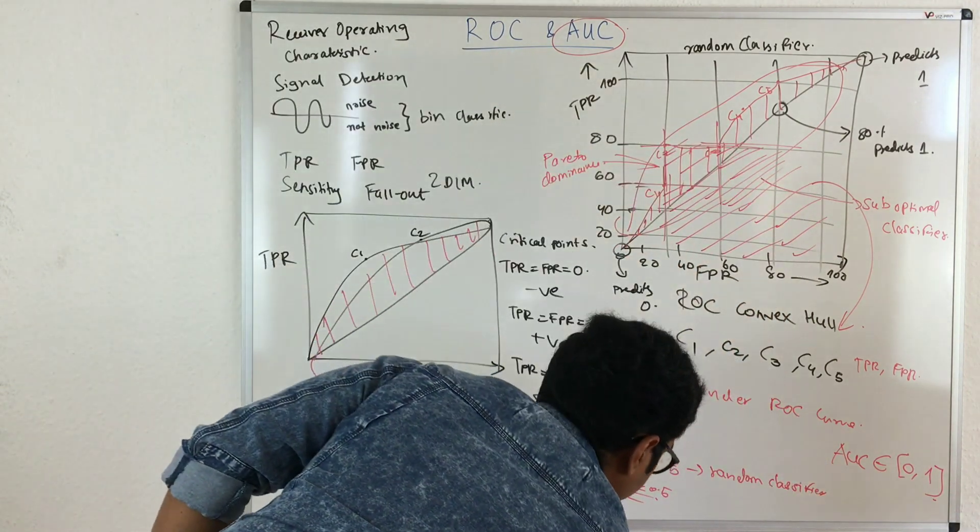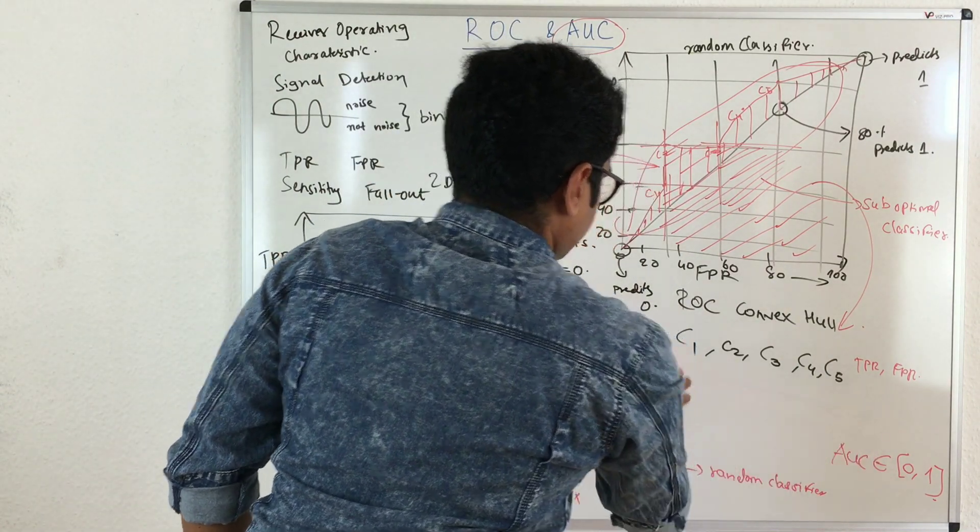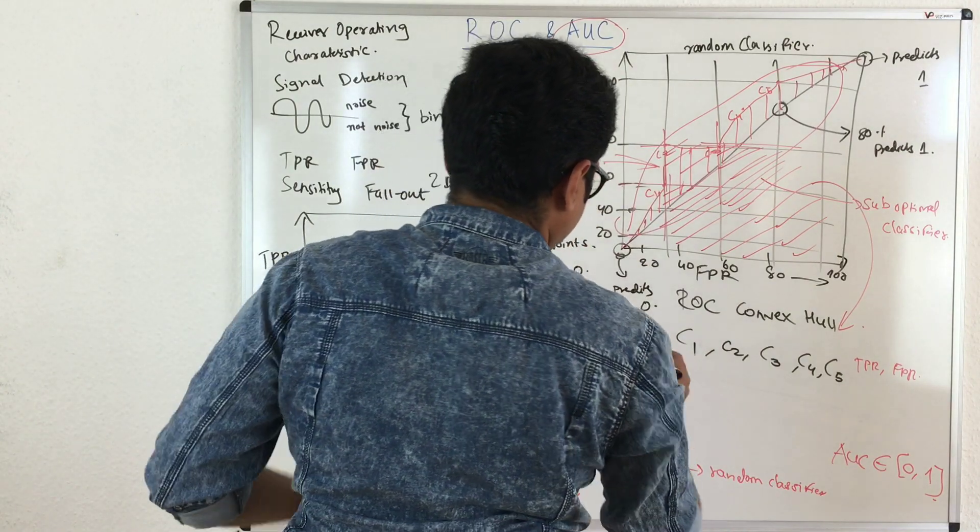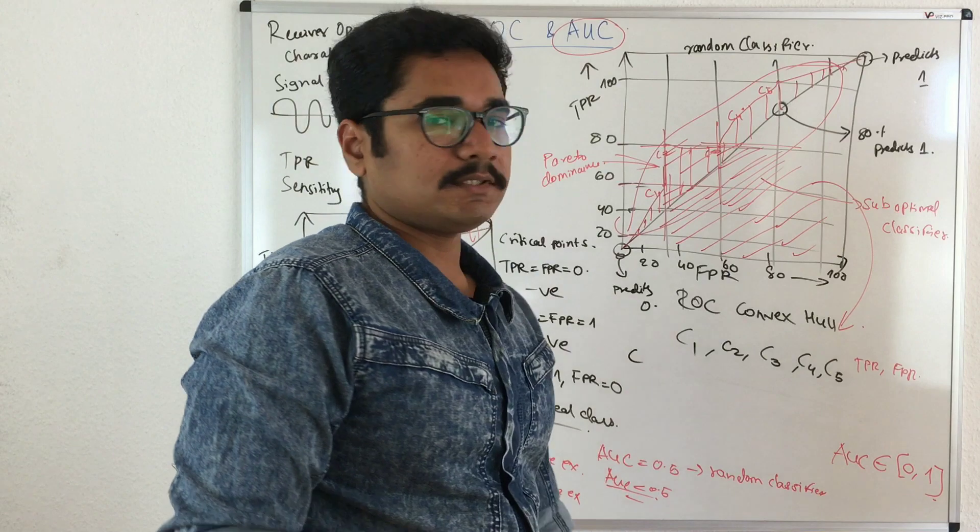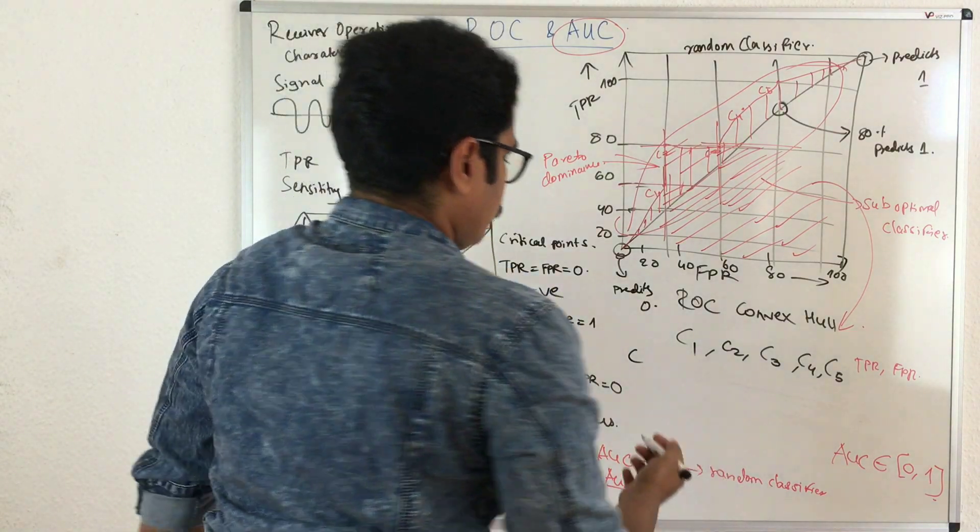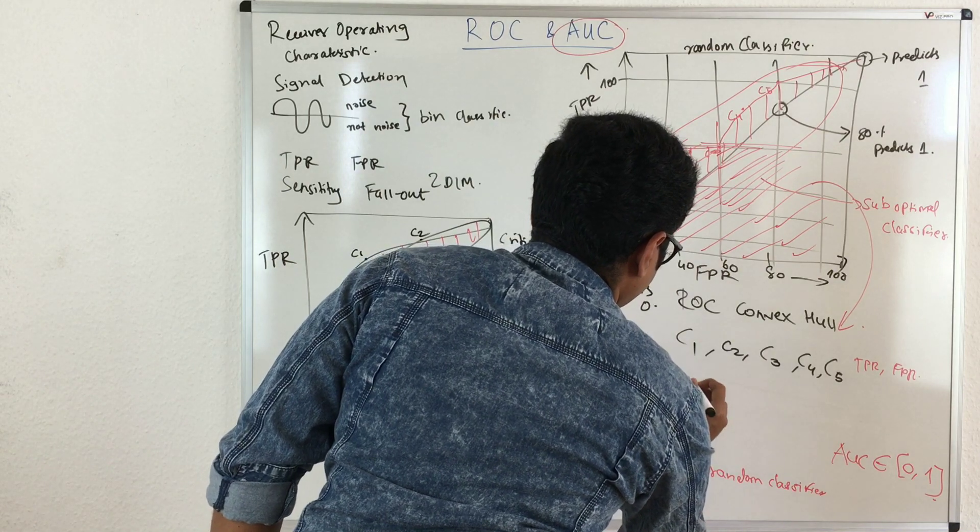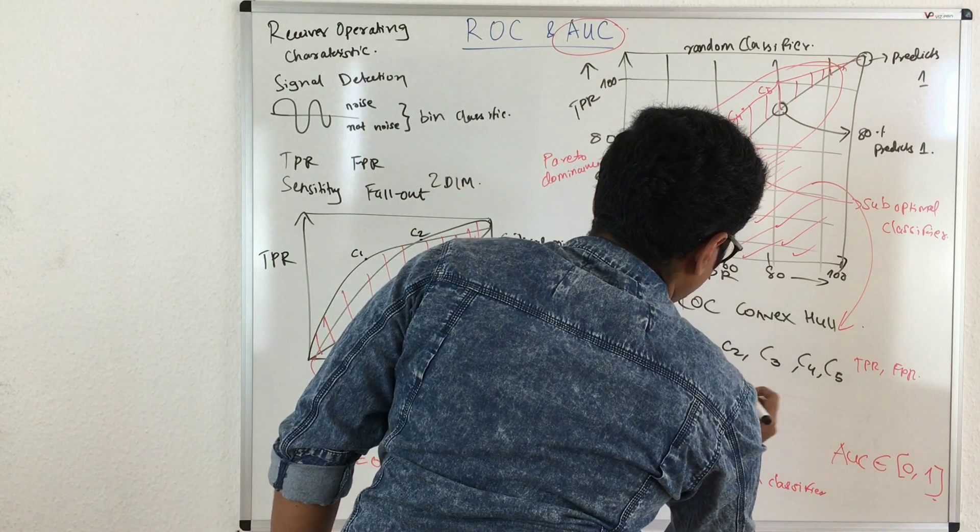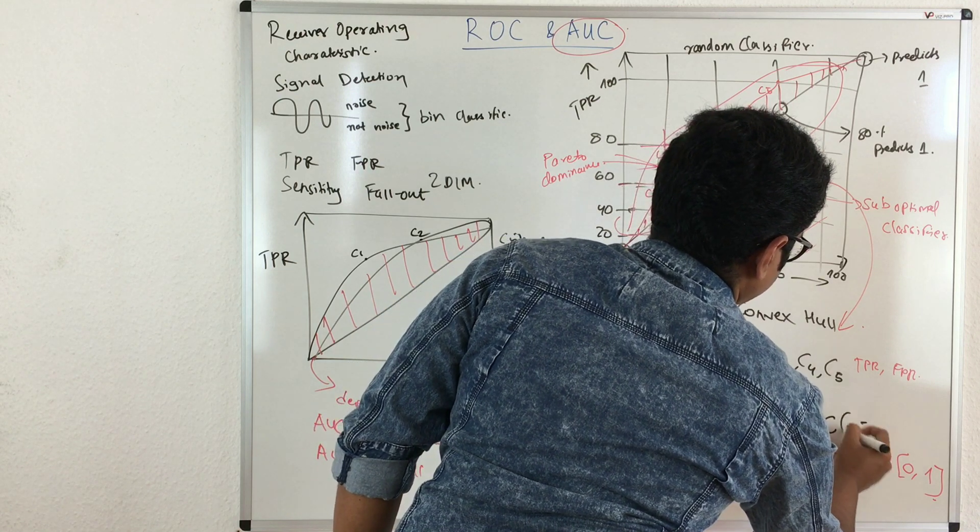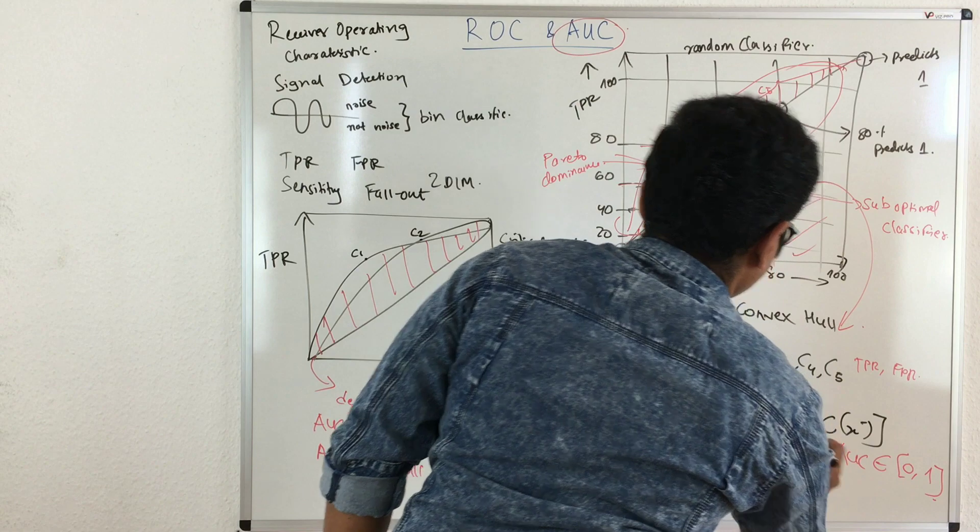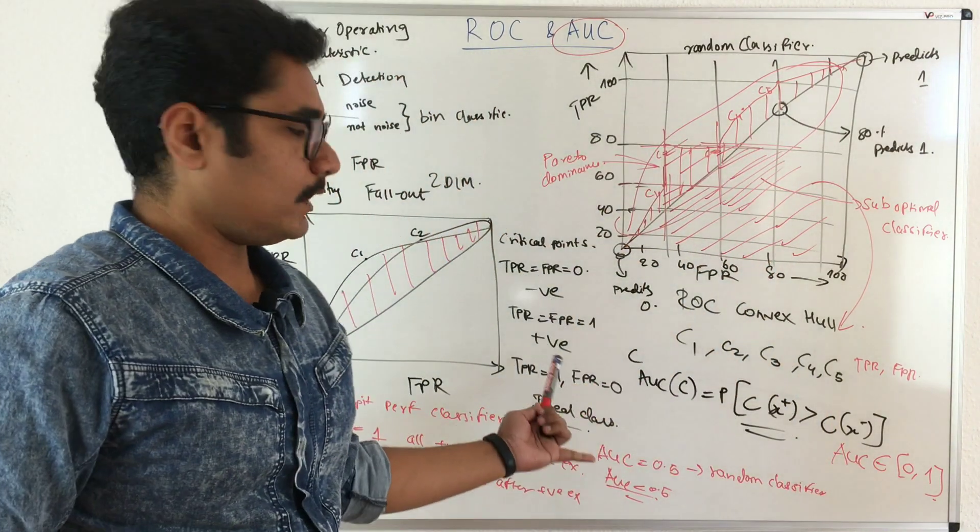Now how do we do the interpretation of AUC curves? For example, you have a classifier C and you want to predict the rank of positive examples higher than the rank of randomly chosen negative examples. It's written as AUC of C, which is equal to probability of X plus greater than X minus. This is how you mathematically estimate the area under a curve.